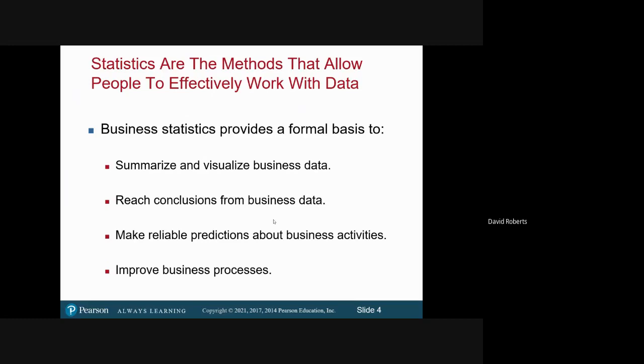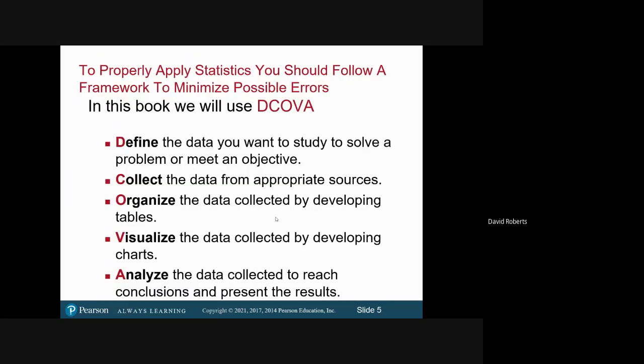What you're doing is you're summarizing it into something that makes sense. You're going to use software through Excel mainly. We're going to look at business data, all kinds of various types of data, and we're going to use it to make what we feel are reliable predictions about what percentage of the population would actually buy our product. We'll use it for quality issues, for improving business processes.